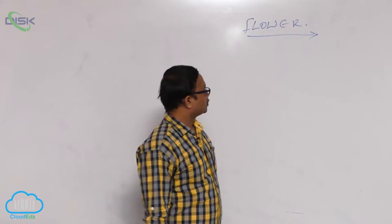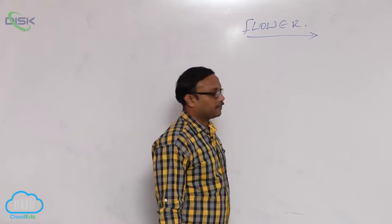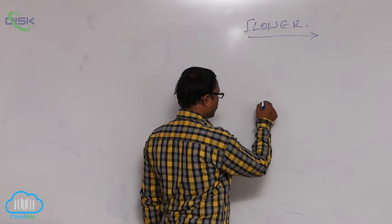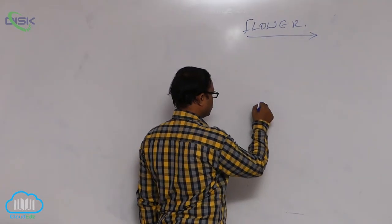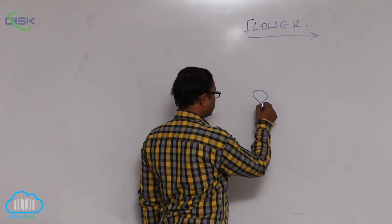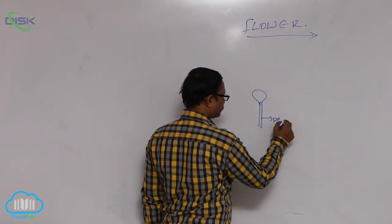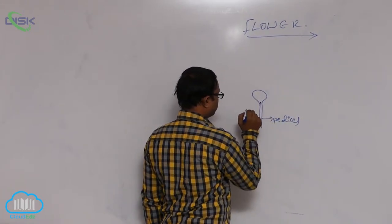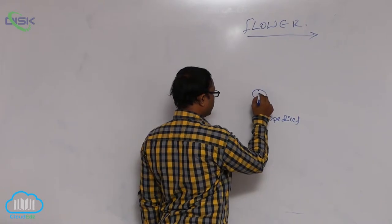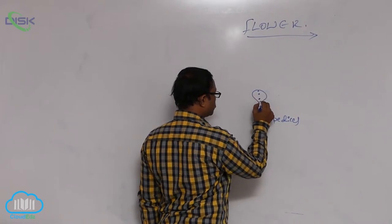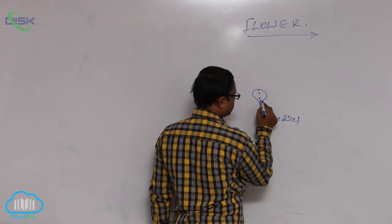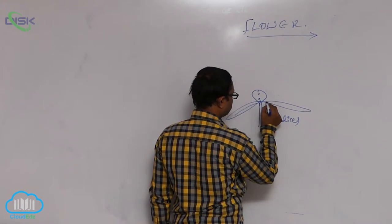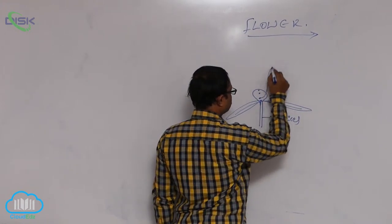The swollen tip of the peduncle is known as the thalamus. On the swollen tip of the peduncle, at different nodes, floral leaves are arranged. For example, you can see this in the diagram.